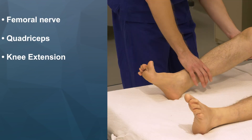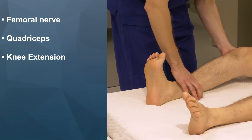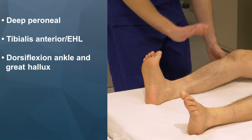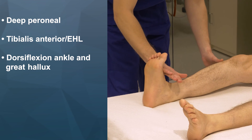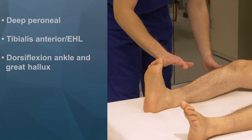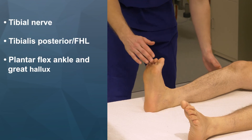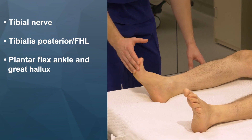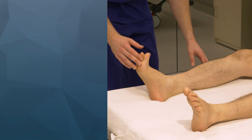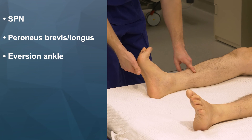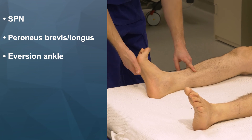Now the motor assessment. The femoral nerve innervates the quadriceps and is responsible for knee extension. The deep peroneal nerve innervates tibialis anterior and EHL, which is responsible for dorsiflexion of the ankle and the great hallux. The superficial peroneal nerve innervates tibialis posterior and FHL, which is responsible for plantarflexion of the ankle and great hallux. The superficial peroneal nerve also innervates peroneus brevis and longus and is responsible for eversion of the ankle.